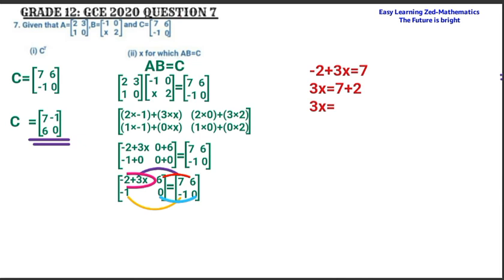So 3X equals 9. To find X, I divide both sides by 3: 3X divided by 3 gives X, and 9 divided by 3 gives 3. So the value of X is 3. We were asked to find X for which matrix A multiplied by matrix B equals matrix C, and the value of X is 3.